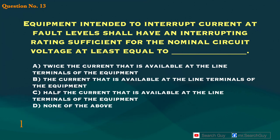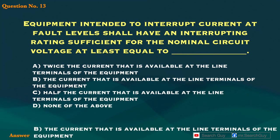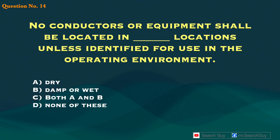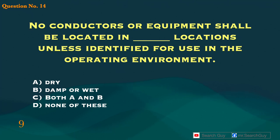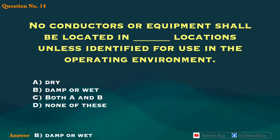Answer: B. The current that is available at the line terminals of the equipment. Question 14. No conductors or equipment shall be located in blank locations unless identified for use in the operating environment. A. Dry. B. Damp or wet. C. Both A and B. D. None of these. Answer: B. Damp or wet.